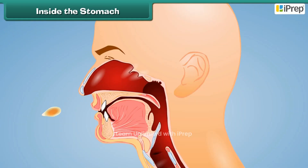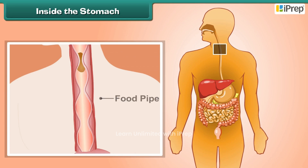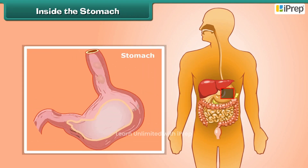Inside the stomach: The tongue pushes the broken food down through a tube-like structure called the food pipe, which connects the mouth to the stomach. The stomach is a hollow, muscular bag which churns the food into a fine paste. The walls of the stomach release digestive juices that mix well with the food and break down the proteins into simpler form.